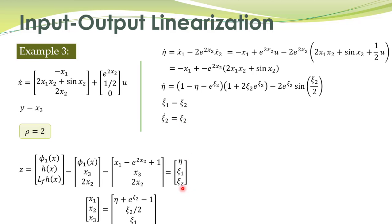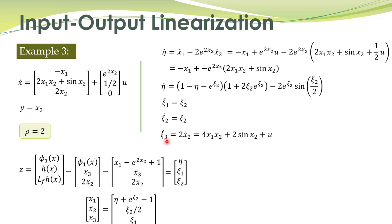Correcting the mistake: xi1 dot is equal to xi2, and xi2 dot should equal the corresponding expression.